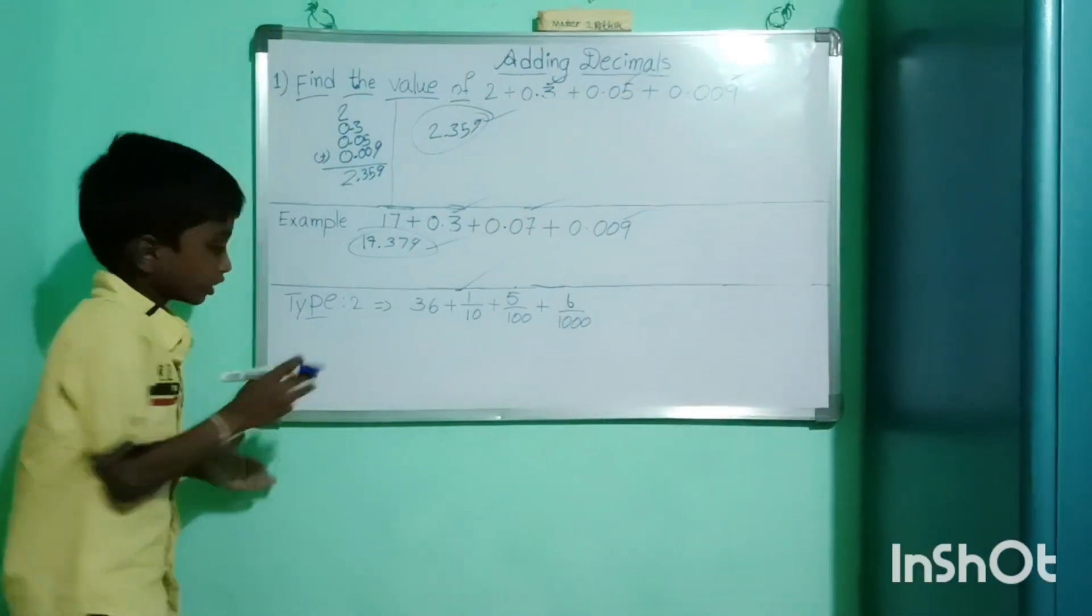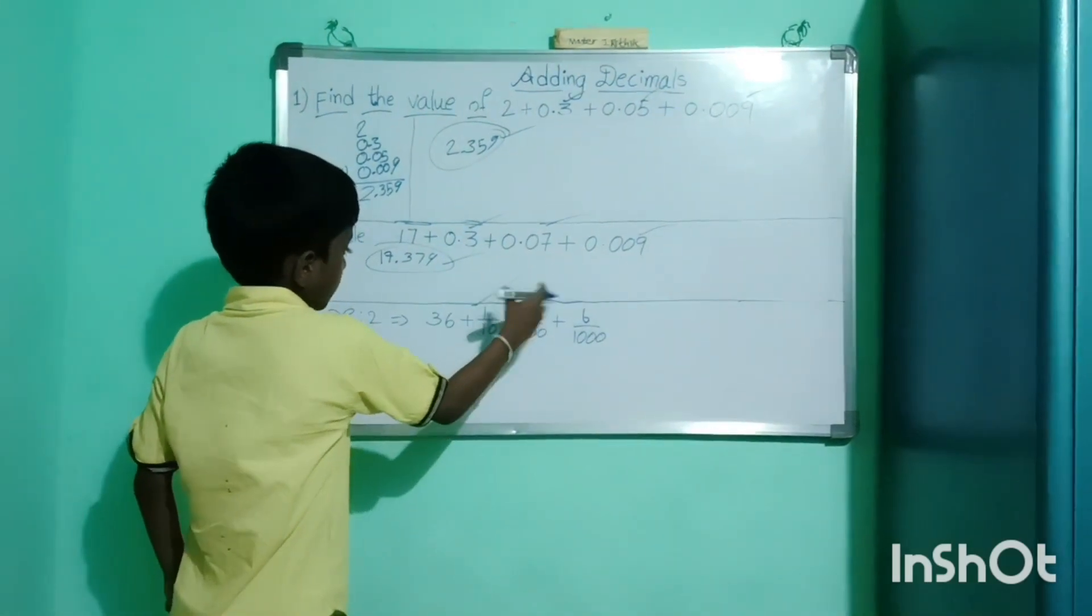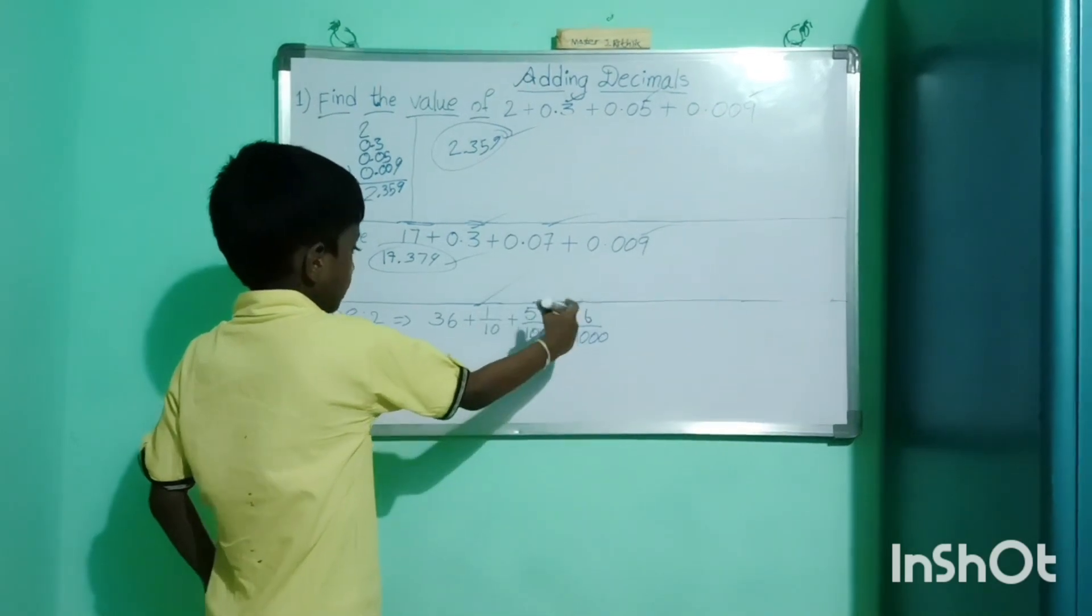Type 2. 36 plus 1 by 10 plus 5 by 100 plus 6 by 1000.